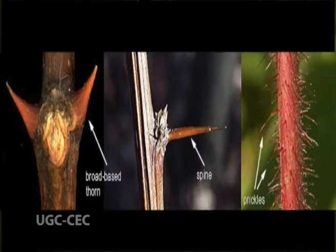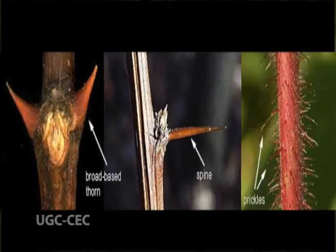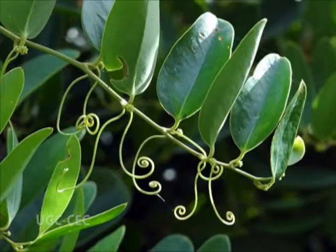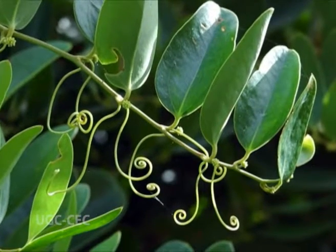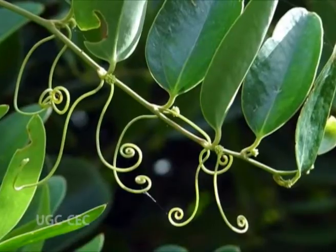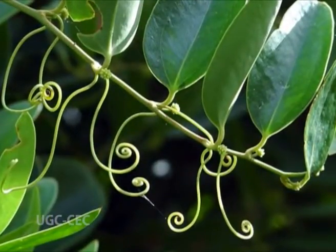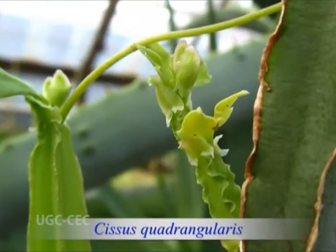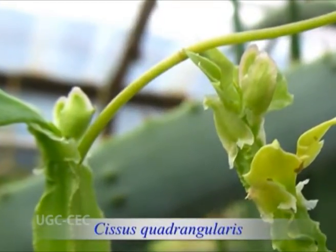Generally thorns and prickles are considered similar, but they differ greatly in origin, position, and morphology. Prickles have a superficial origin and are mere outgrowths which never bear leaves, flowers, or fruits. Their position is not axillary or terminal like a thorn — they are distributed all over the stem. Some weak-stemmed plants produce wiry, coiled, sensitive, and delicate organs for climbing called tendrils, which may develop from either the axillary bud or the terminal bud. In Passiflora, tendrils develop from the axillary bud; in Cissus quadrangularis and Vitis vinifera, the terminal bud develops into tendrils.